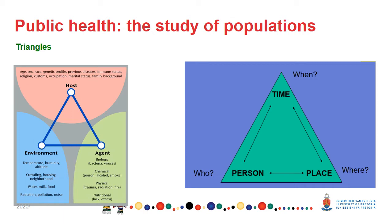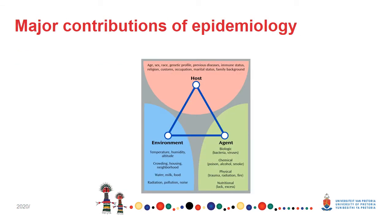Epidemiology not only measures the relationships between the host and the agents in certain environments, but also analyzes the health status of the population living in that environment. The second triangle of who, when and where is the key in describing the occurrence of disease or health conditions. As epidemiology is one of the essential tools of public health, its major aim is to contribute to fulfillment of the definition of public health as a science and art to promote health and prevent disease by organized effort of society, which you have already learned about.